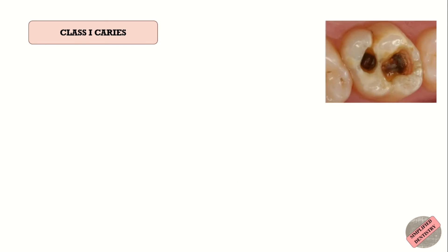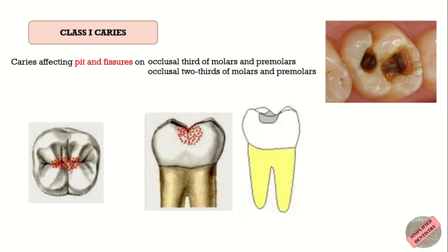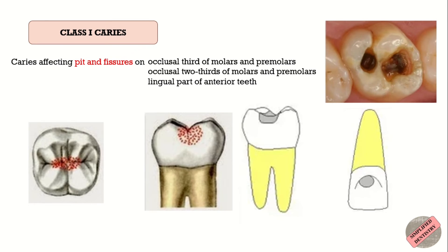Class 1 caries is the caries affecting pits and fissures on the occlusal third and occlusal two-thirds of molars and premolars, and also on the lingual part of anterior teeth. Class 1 is the only pit and fissure caries, whereas the rest are smooth surface caries. It is present on the occlusal surfaces of posterior teeth, and if the pit and fissure extends down to the lingual and buccal surfaces of posterior teeth, it is also included in Class 1. The pits and fissures on the lingual surfaces of anterior teeth are also Class 1. So it is the occlusal surface for posterior teeth and the lingual surface for anterior teeth.